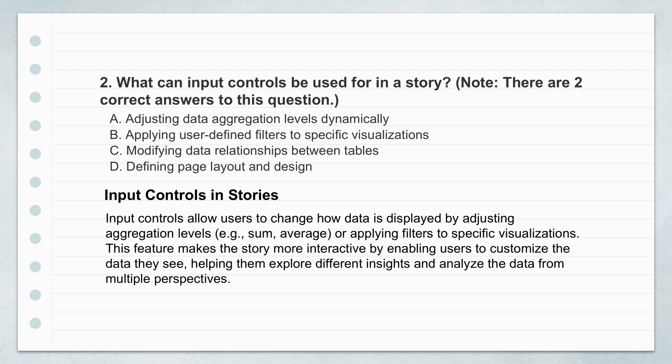Our second question is: what can input controls be used for in a story? Again, two correct answers. Options: A, adjusting data aggregation levels dynamically; B, applying user-defined filters to specific visualizations; C, modifying data relationships between tables; D, defining page layout and design. A and B really seem to give the user the ability to play with the data they're seeing — and that's correct. A and B are the correct answers.